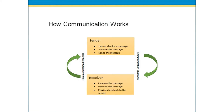The sender is the communicator who originates the message. The receiver is the communicator who receives the message. The message conveys the sender's communication intent to the receiver. The process begins with the sender wanting to share an idea or message with another person or receiver. The sender encodes the message into a form that the receiver can easily understand.